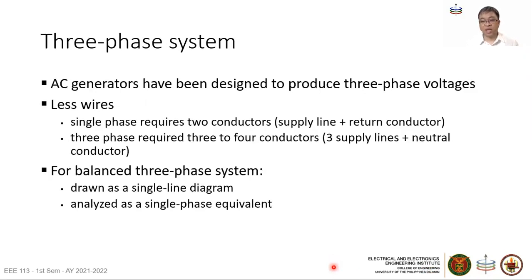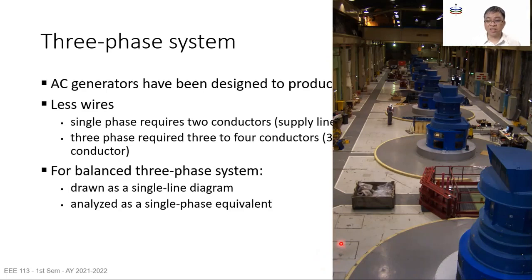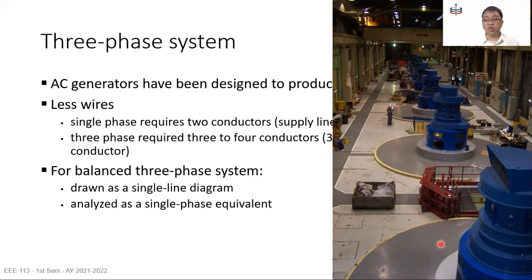We start with the three-phase system. A single line in the system diagram corresponds to three wires in the actual system. If you go inside a large power plant, you will see a number of large generating machines — about six large generating units. When optimizing the design of these generating units, it turned out that a better design was developed when there are three sets of windings or wires inside every generating unit to produce sinusoidal voltage.